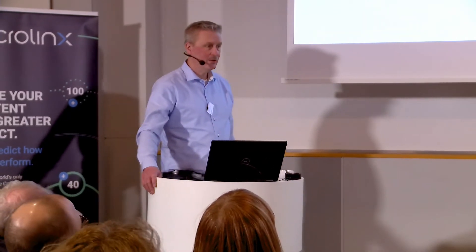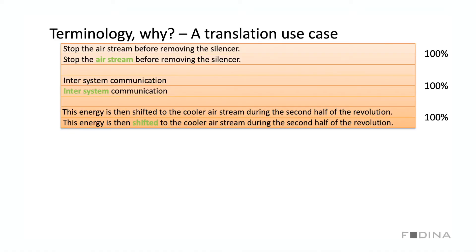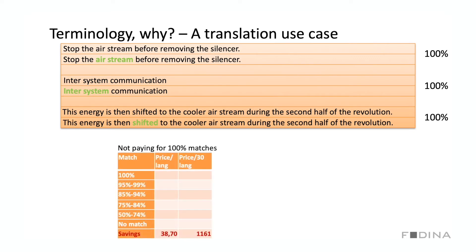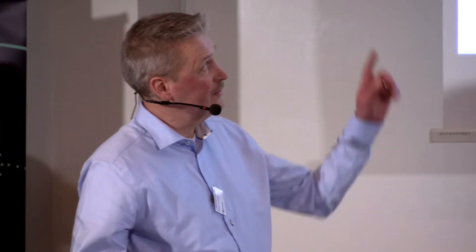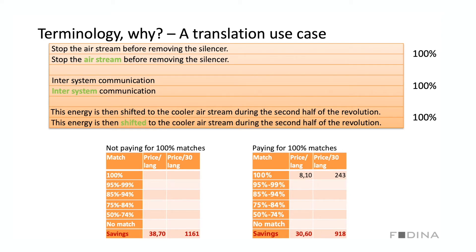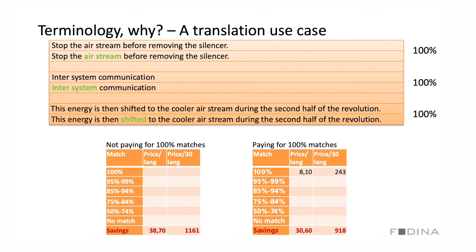Let's assume the translation agency charges 150 per new word, but with matching grades above 74% you get a reduction — just 90 euro for 75–99% matches. The three new sentences contain 27 words together, and it would cost 3,870 Swedish krona to translate them. Translating into 30 languages, you're talking about 116,000 krona. If instead the writer had written exactly the same sentence the second time, they would be 100% matches. Even paying 20% for 100% matches, you would save 918 krona on just three sentences translated into 30 languages.